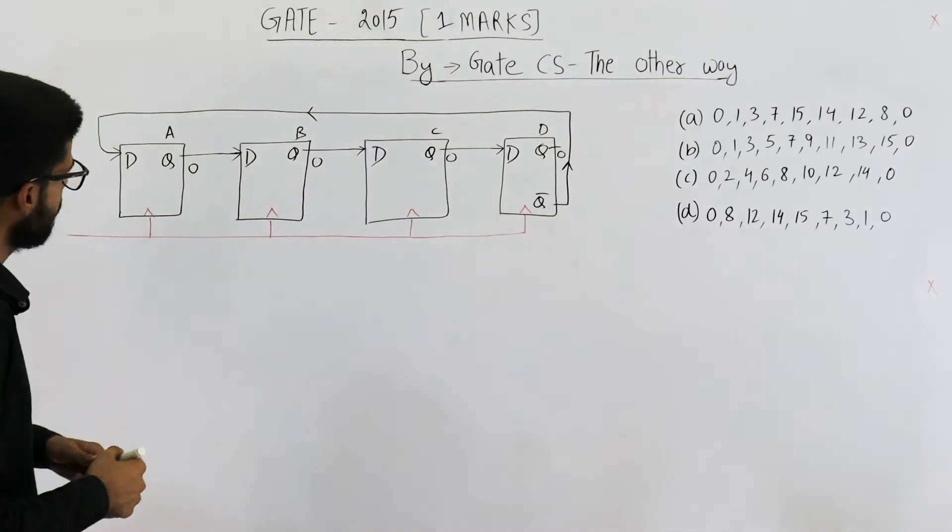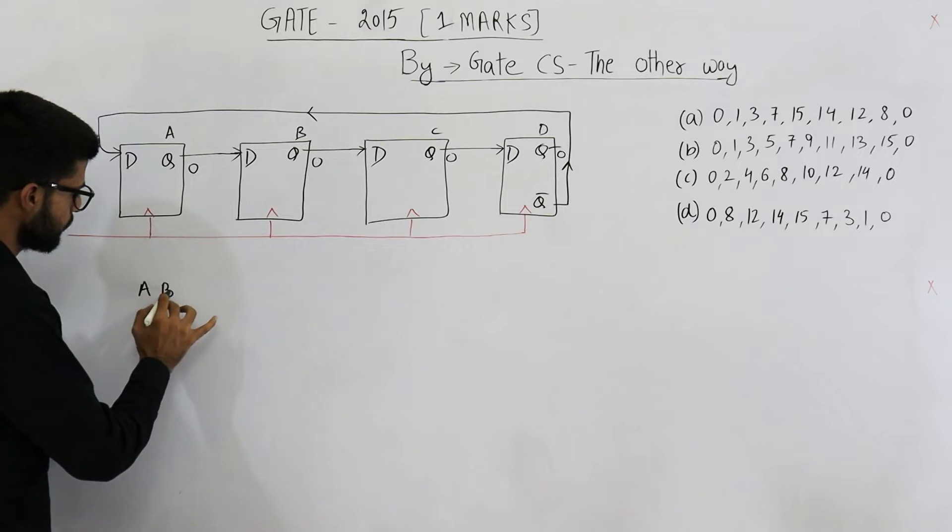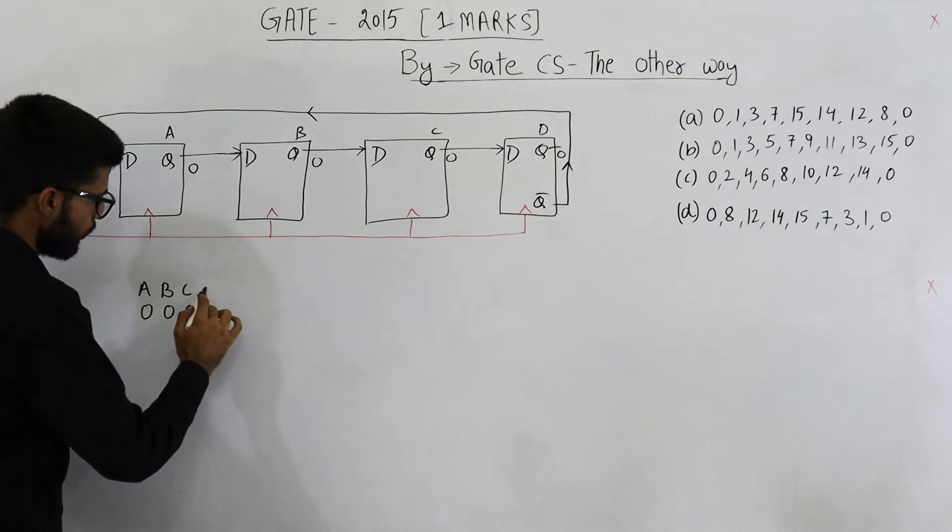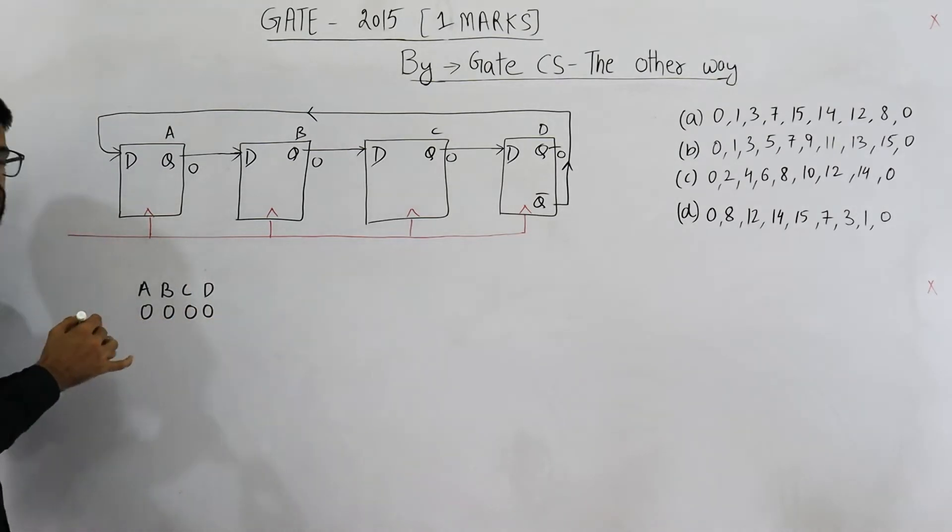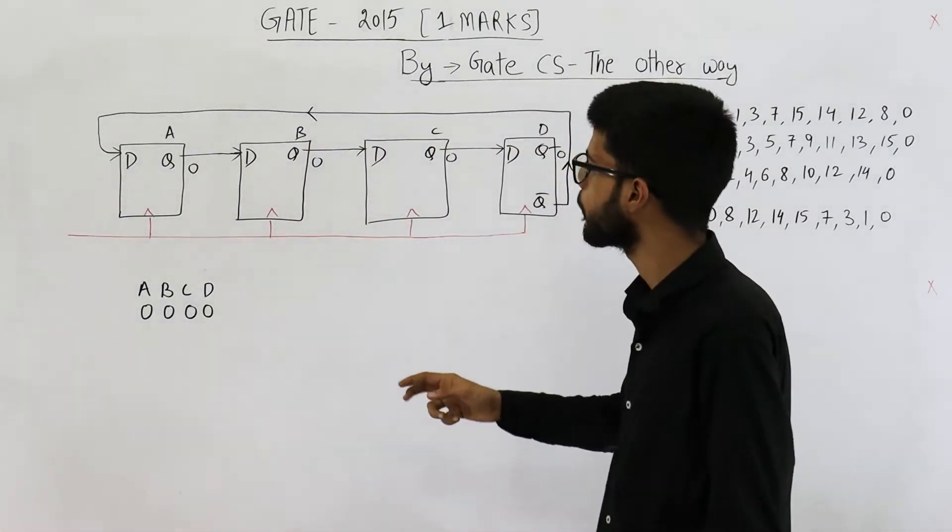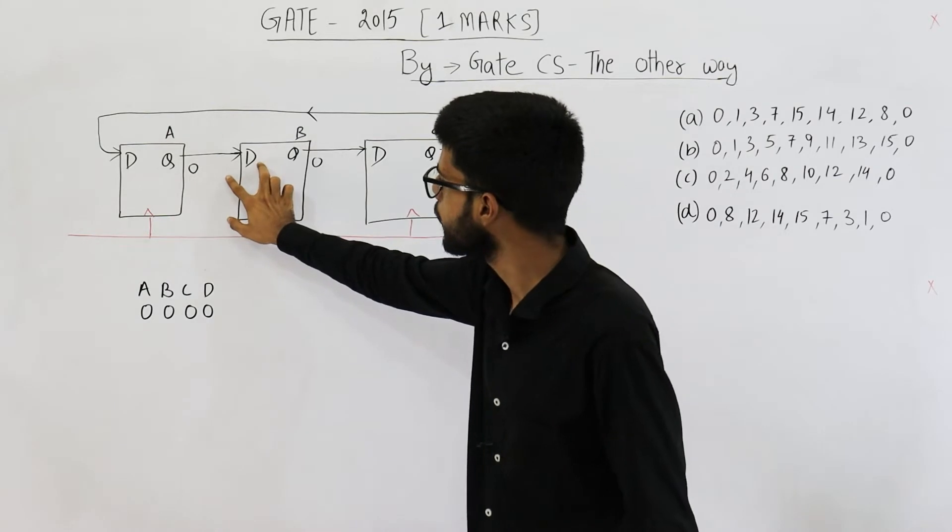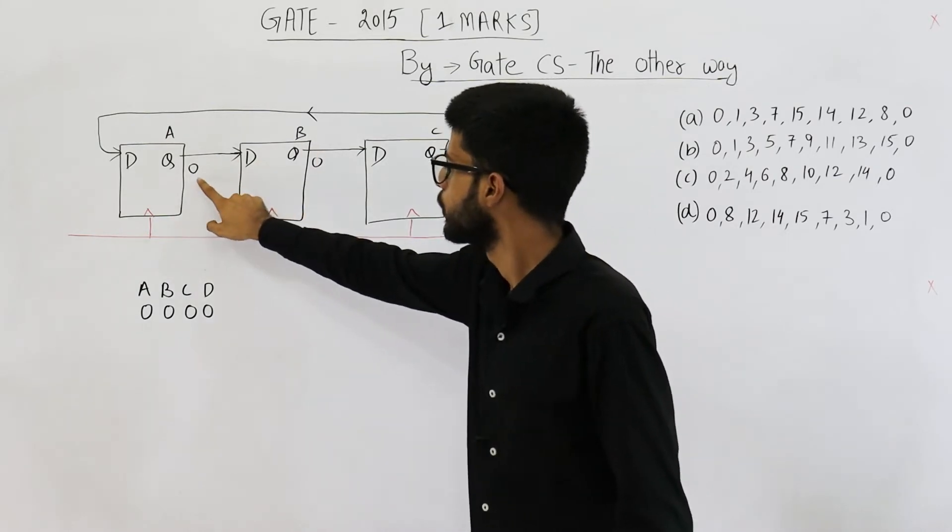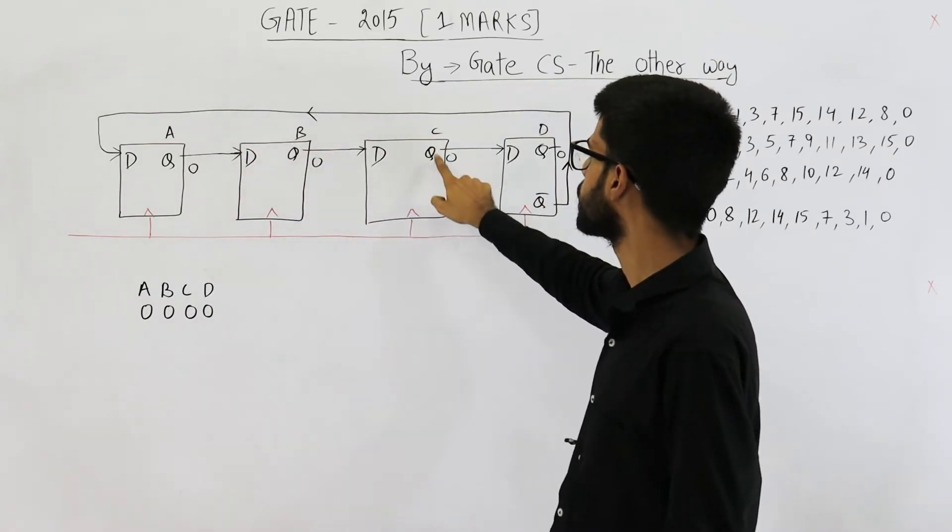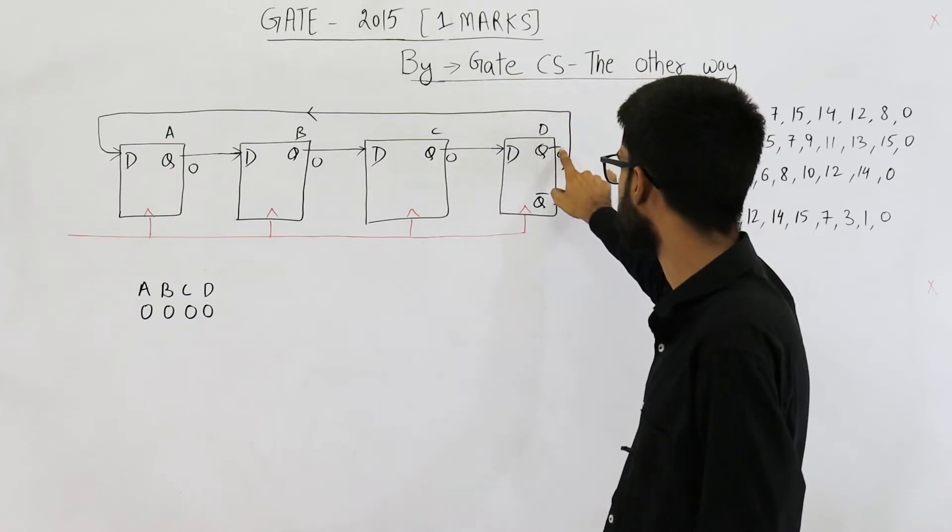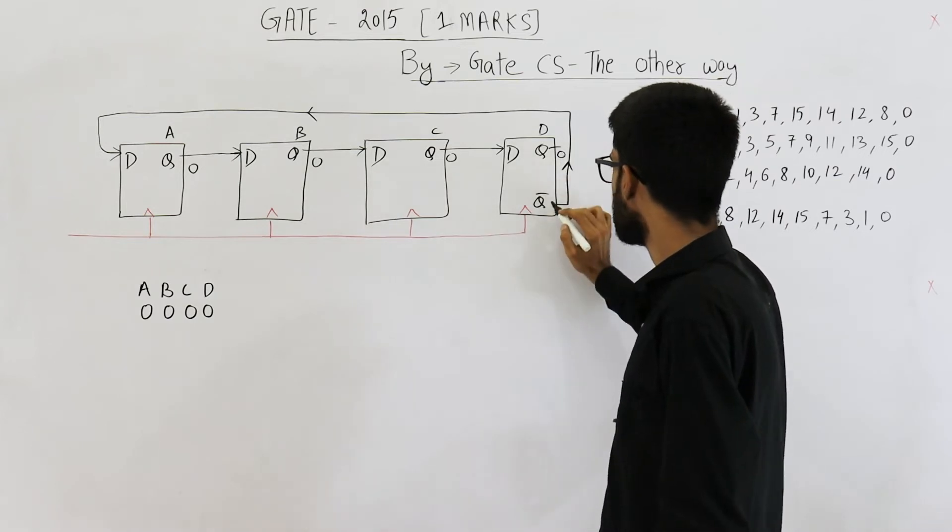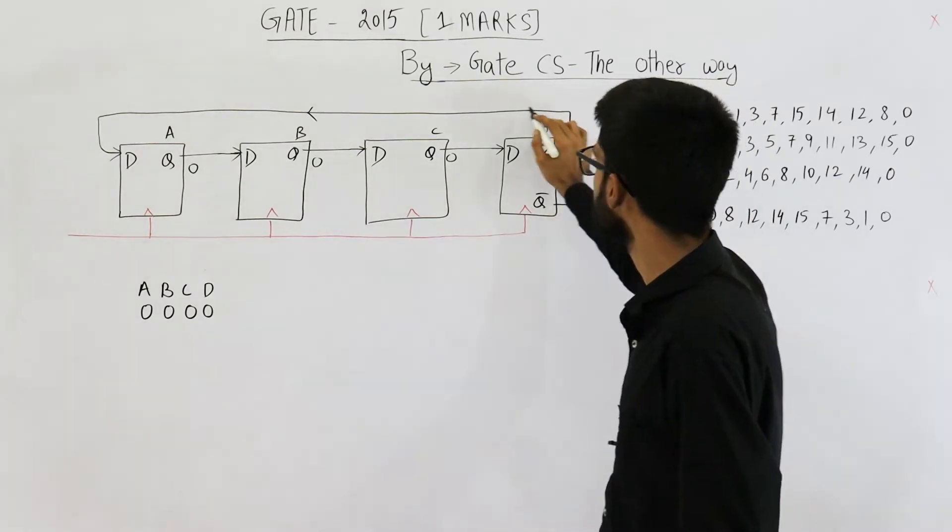Now you see, initially, the state is 0000. Whenever we give a clock signal, what will happen? Upon seeing a clock signal, each and every D flip-flop will just take its input and give it as the output. So input to this D flip-flop is 0, that 0 will be shifted here. This 0 will be shifted here. This 0 will be shifted here.